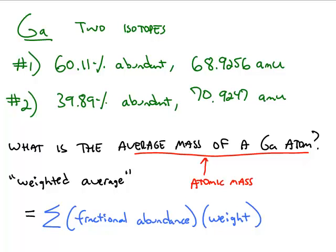Because elements exist in different isotopic forms, and those isotopes contain different numbers of neutrons, each isotope has a different mass.